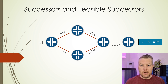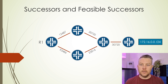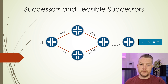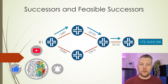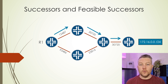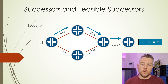In particular, let's take a look at the 172.16.0.0/24 network. Each link here has an EIGRP composite metric. Router R1 will work out the best path to this network. Now this path will be the path that has the lowest EIGRP metric. This is what we call the successor route.